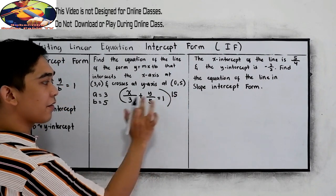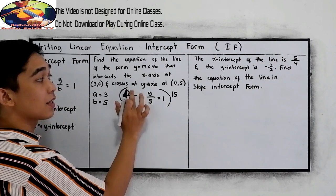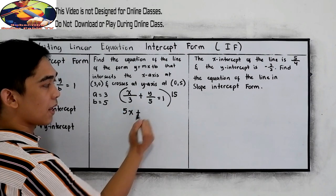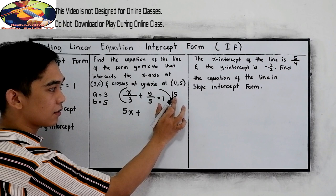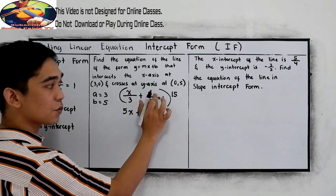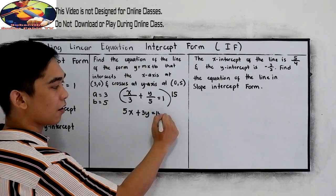15 divided by 3, that is 5, times x. So we have 5x plus 15 divided by 5, that is 3, times y. 3y is equal to 1 times 15, which is 15.